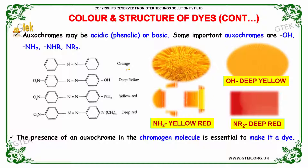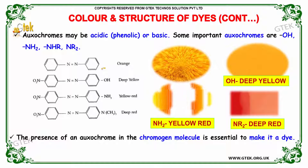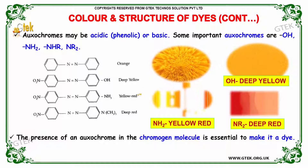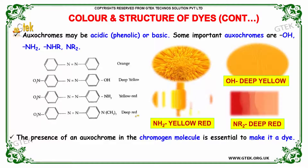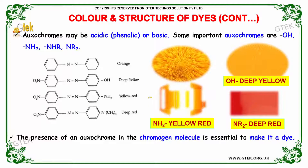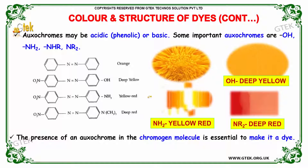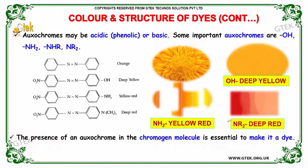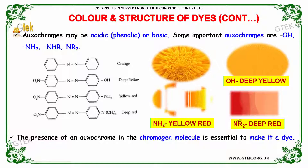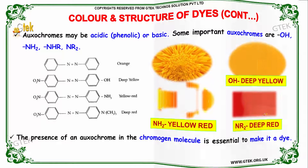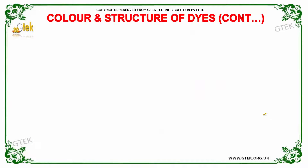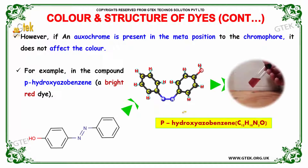They exhibit various colors like orange, deep yellow, yellow-red, and deep red. The presence of an oxochrome in the chromogen molecule is essential to make it a dye. However, if an oxochrome is present in the meta-position to the chromophore, it does not affect the color.